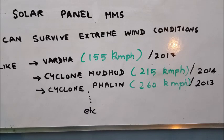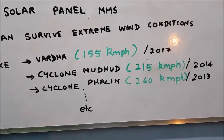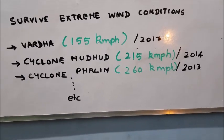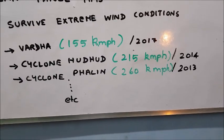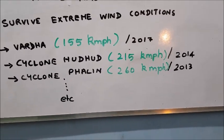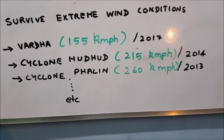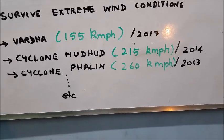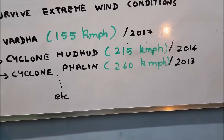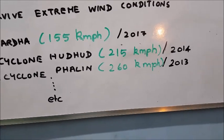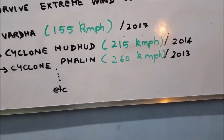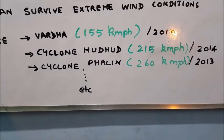This happened recently, and cyclone Hudhud, I don't know how to pronounce it exactly, but its top speed was 215 kilometers per hour in the year 2014, and cyclone Phalin which hit us with 260 kilometers per hour in the year 2013, and the list goes on and on.